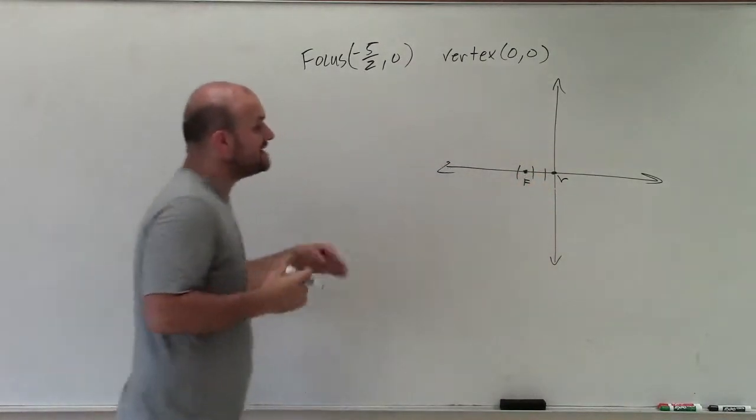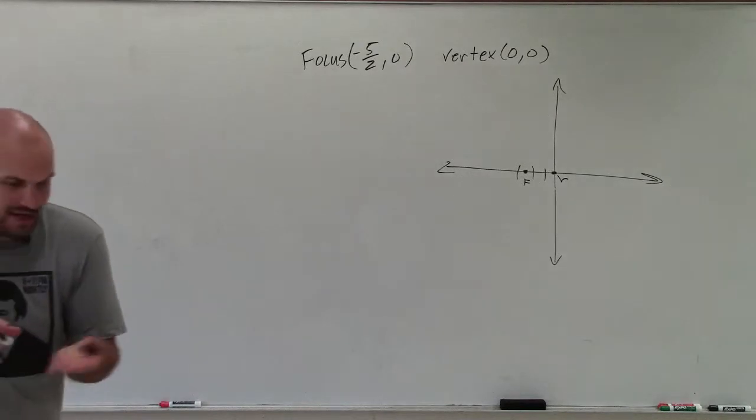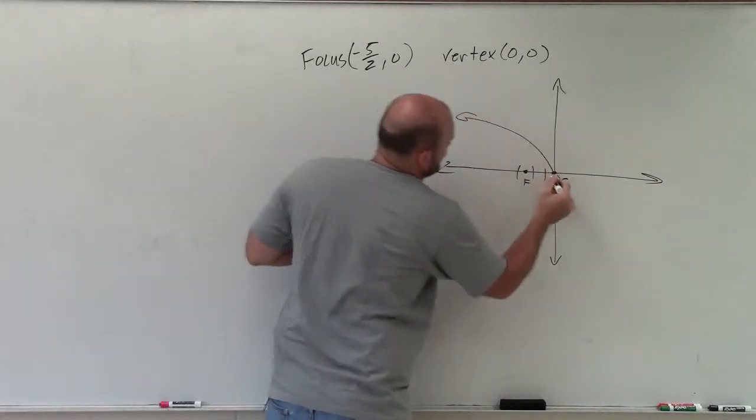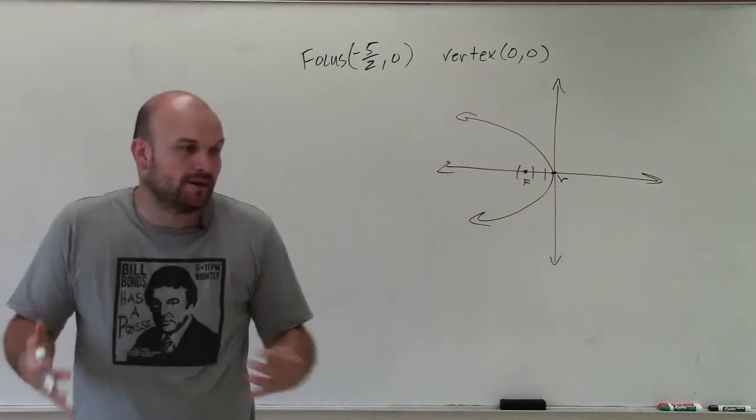Since my vertex is at 0, 0 and the focus goes to the left of it, I know that my parabola has to open up this way. It has to open up that way.